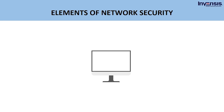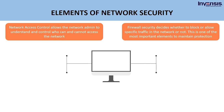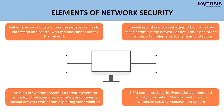Network access control allows the network admin to understand and control who can and cannot access the network. Firewall security decides whether specific traffic in the network has to be blocked or allowed — one of the most important elements to maintain protection. Intrusion prevention system is a threat prevention technology that examines, identifies, and prevents unusual network traffic from exploiting vulnerabilities. SIEM combines security event management and security information management into one composite security management system.